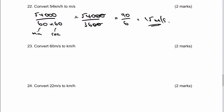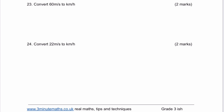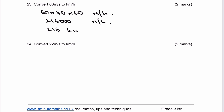Number 23 and 24 are slightly trickier. If we're saying it's 60 metres per second and we want to convert it to kilometres per hour, we multiply by 60 to get metres per minute, and then multiply by 60 again to get metres per hour. So the number of metres covered in one hour is going to be 216,000 metres per hour. If I want the answer in kilometres per hour, I divide by 1,000, because there are 1,000 metres in a kilometre, giving 216 kilometres per hour.